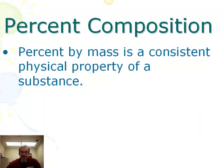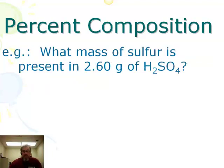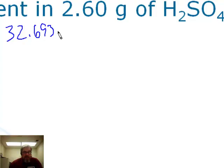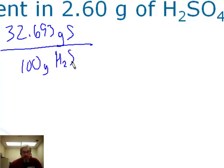The percent by mass is a consistent physical property of a substance. Once you know the formula and the percent composition, it's always that percent composition. So we can use it as a problem-solving tool in dimensional analysis and proportions. For example: what mass of sulfur is present in 2.60 grams of H₂SO₄? We found the percent by mass of sulfur in H₂SO₄ is 32.693%, meaning 32.693 grams of sulfur per 100 grams of H₂SO₄.